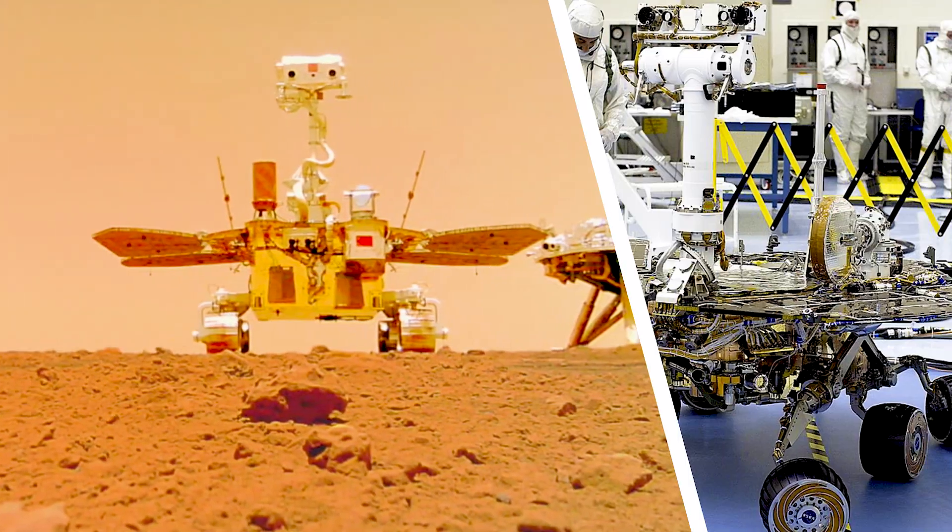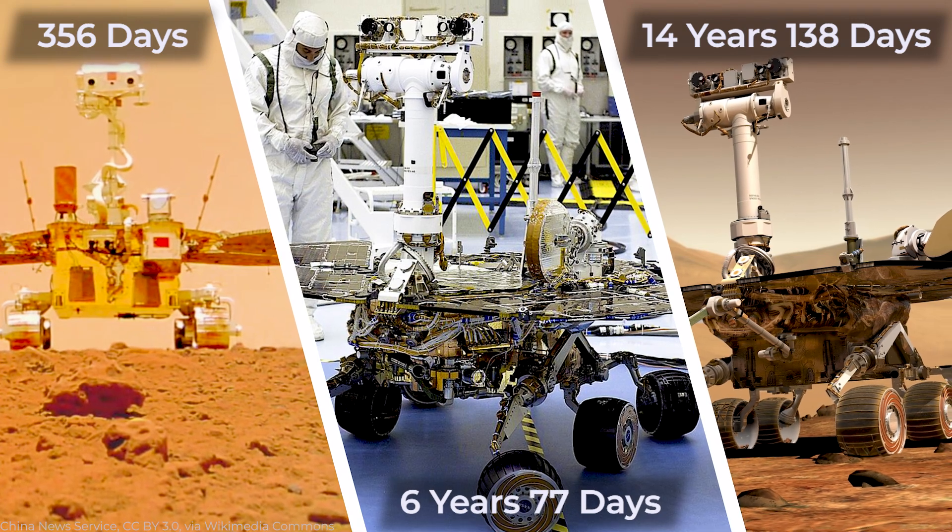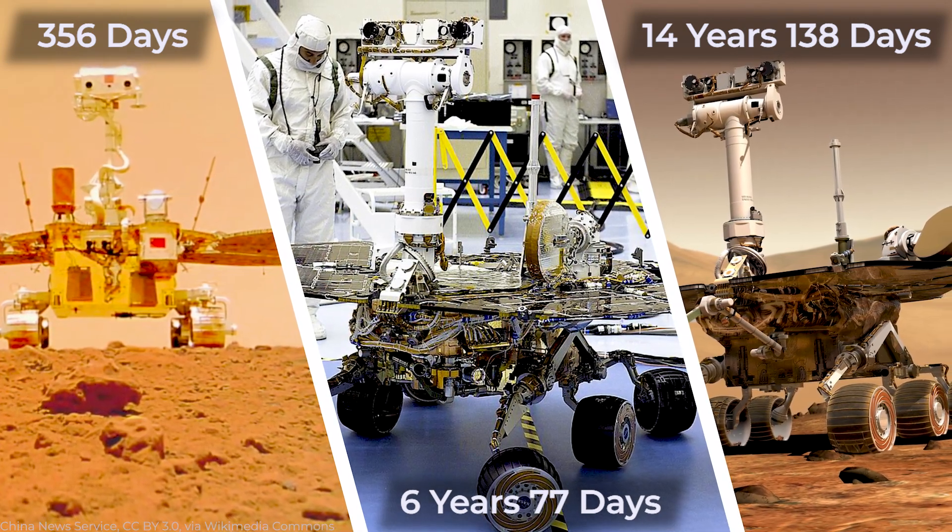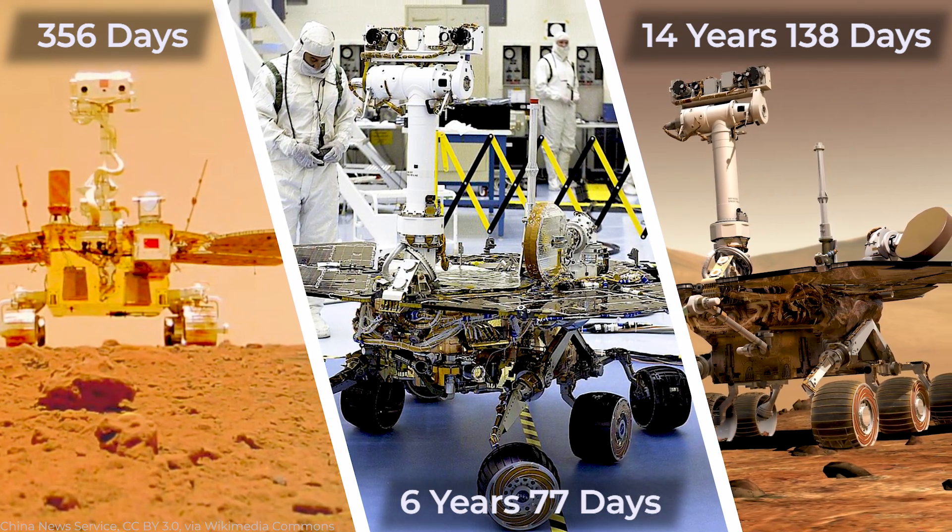Zhurong joined several other inactive Mars robots, including NASA's Spirit and Opportunity rovers, which ceased operations after six years and 77 days and 14 years and 138 days, respectively.